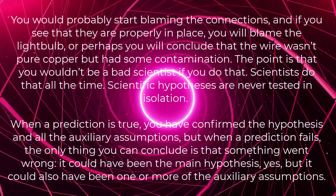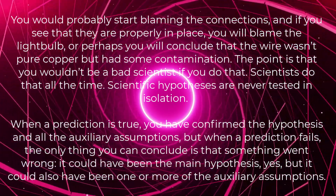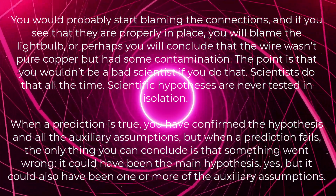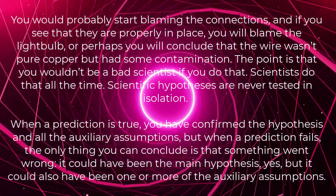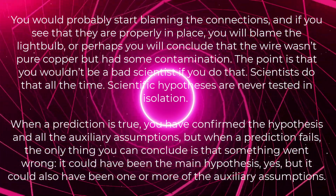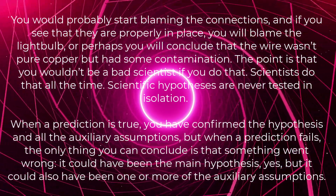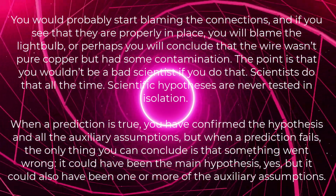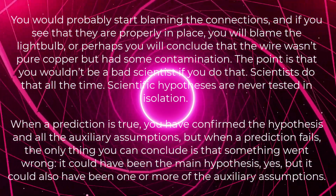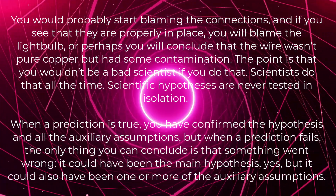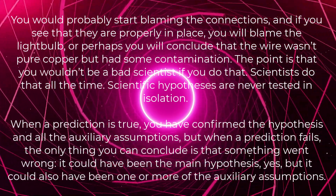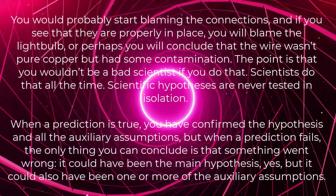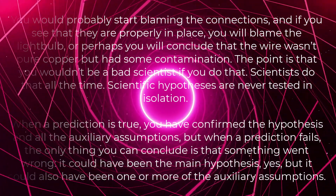The point is that you wouldn't be a bad scientist if you do that — scientists do that all the time. Scientific hypotheses are never tested in isolation. When a prediction is true, you have confirmed the hypothesis and all the auxiliary assumptions. But when a prediction fails, the only thing you can conclude is that something went wrong. It could have been the main hypothesis, but it could also have been one or more of the auxiliary assumptions.